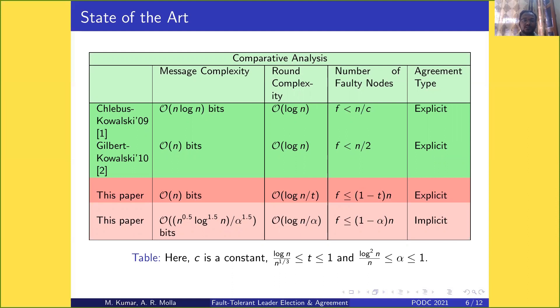In 2010, Gilbert-Kowalski improved this. Message complexity was O(n) bits, which is optimal. Round complexity remained O(log n), and the number of faulty nodes was less than n/2.